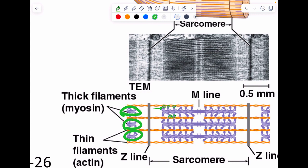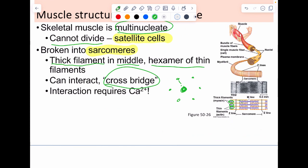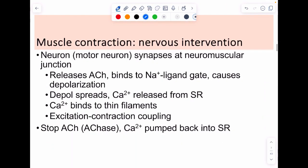In order to get the cross bridge to exist, calcium ions must be present. So the question becomes, how do you get that calcium there? This is due to nervous system interaction. What you need is a motor neuron to synapse at what's known as the neuromuscular junction, also called a motor end plate or myoneural junction.